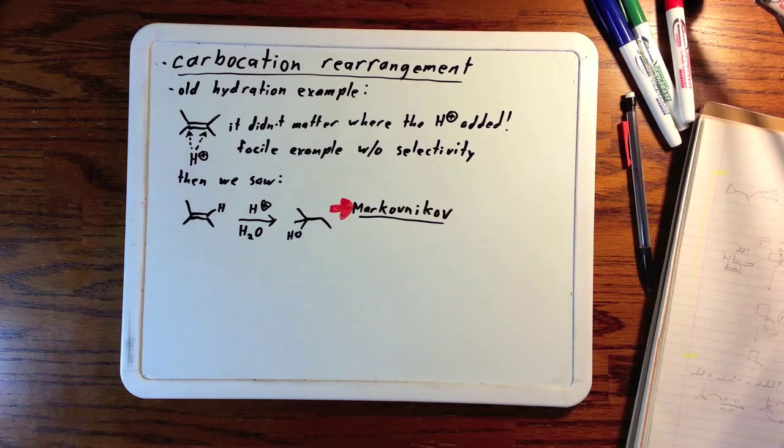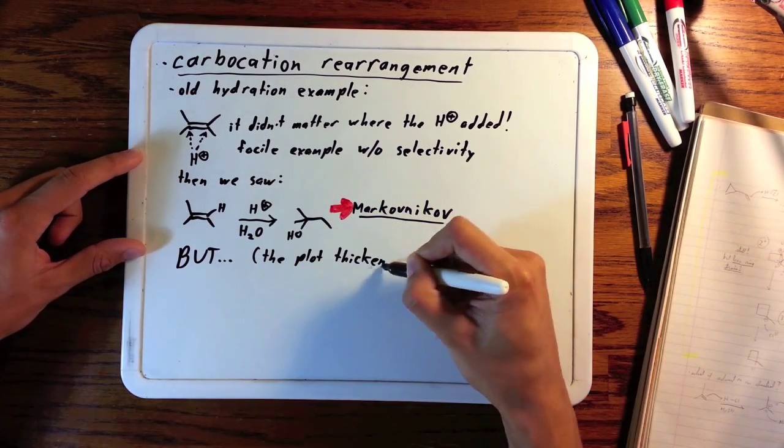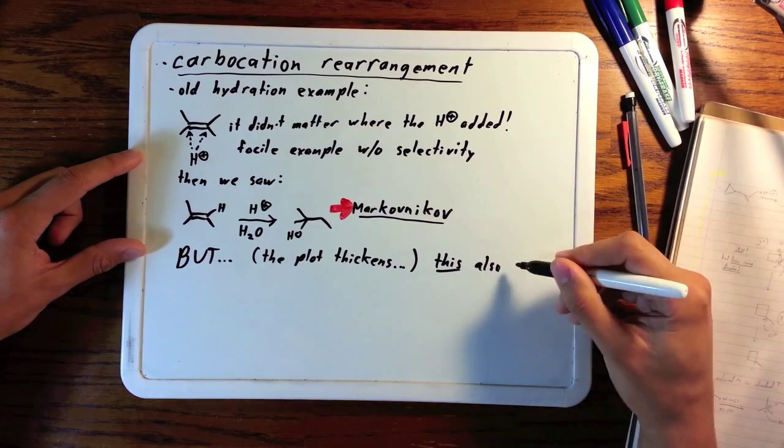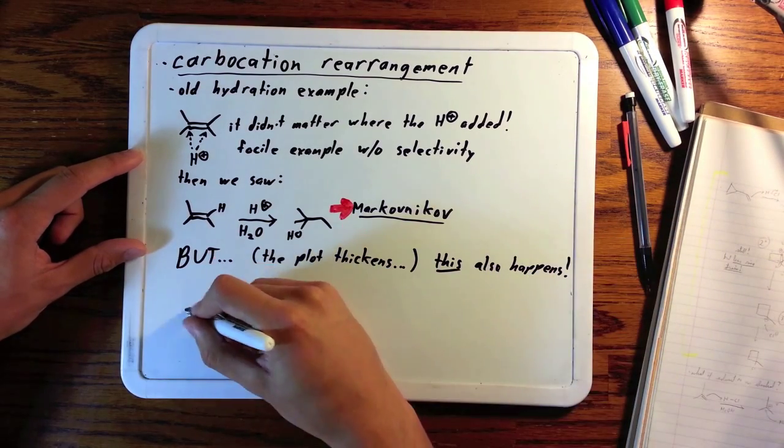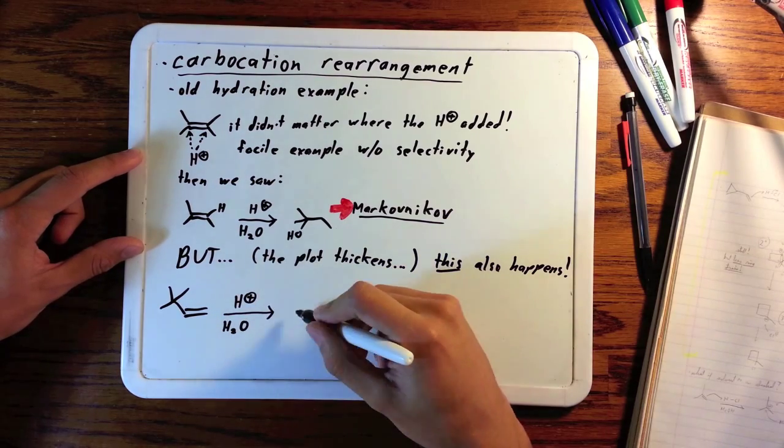These are all pretty simple molecules so far without any branching on their side chains, but the plot thickens. This is also observed to happen. Let's say you had an alkene with three hydrogens around it and a tert-butyl group.